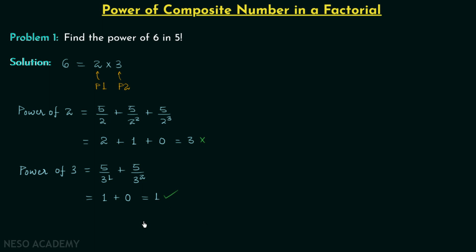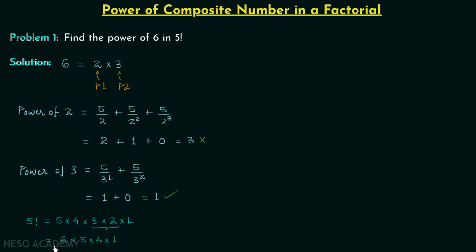Let's check our answer. 5 factorial equals 5 × 4 × 3 × 2 × 1. Here 3 × 2 gives us 6, so we can rewrite this as 6 × 5 × 4 × 1. The power of 6 is equal to 1 — the same answer we obtained. Our answer is verified.